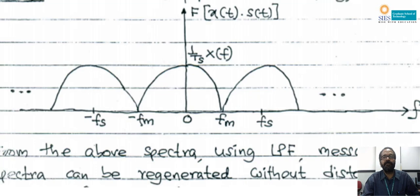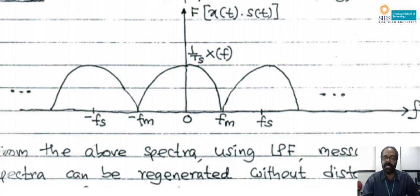Case 2: fs is equal to twice fm. This particular rate is known as the Nyquist rate — the minimum number of samples needed to recover the original signal without any distortion. Even under this case, there is no overlap between X(f) and X(f − fs). Therefore, passing through an LPF with cutoff frequency fm regenerates (1/Ts)·X(f) at the output, which is exactly the same as the original spectrum. This shows that when fs = 2fm or fs > 2fm, the original signal X(f) can be regenerated without any distortion.